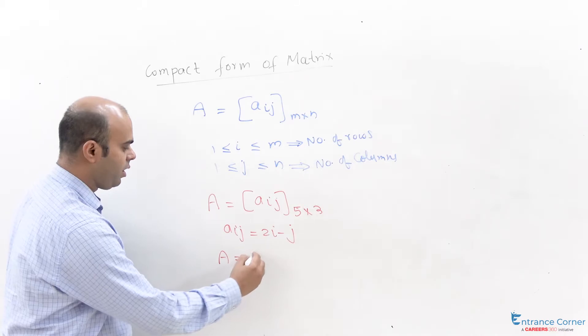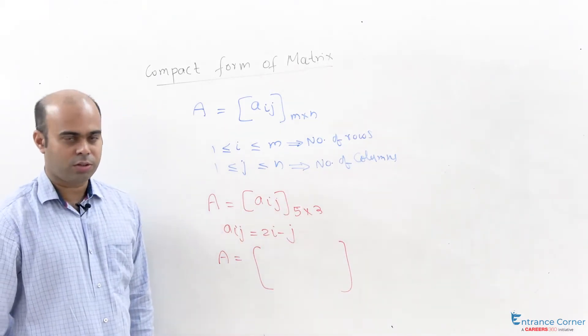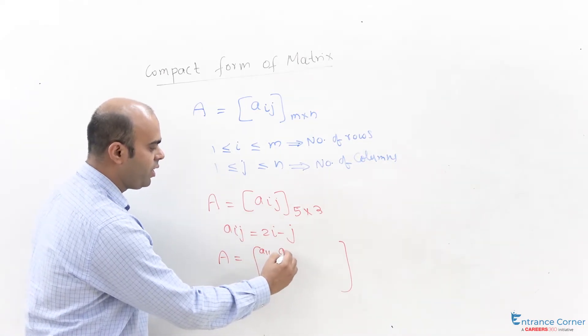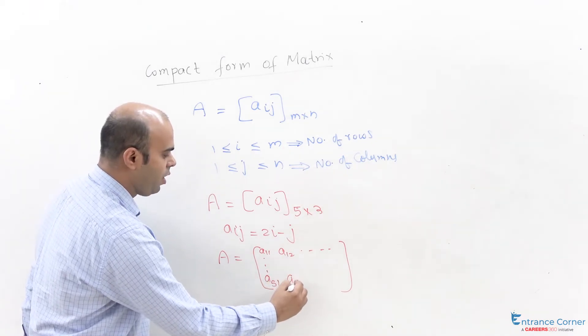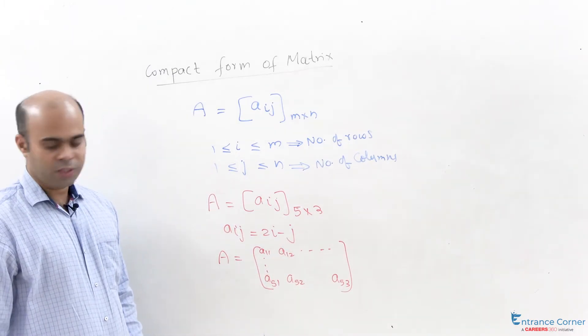We can say that this matrix is having 5 rows and 3 columns. If we talk about the element a11 then we will talk about a12 and so on. As we reach a51, a52 till a53 we write all the elements.